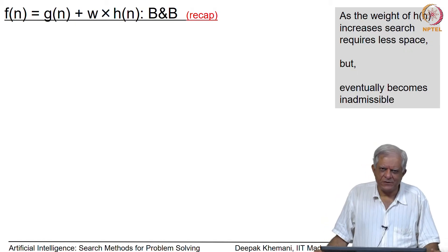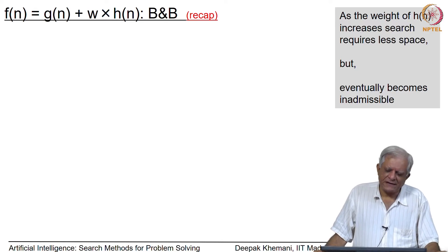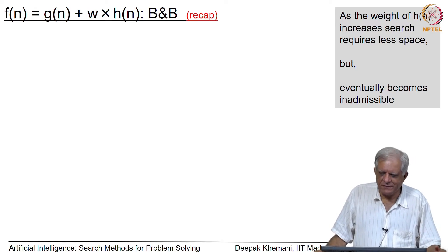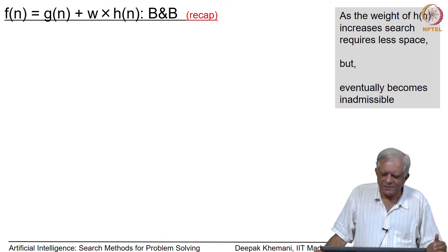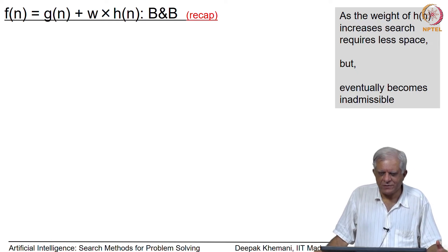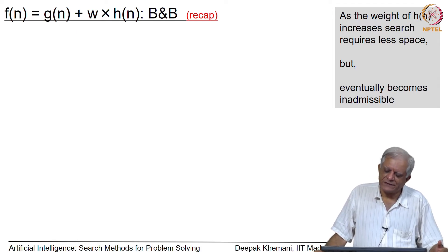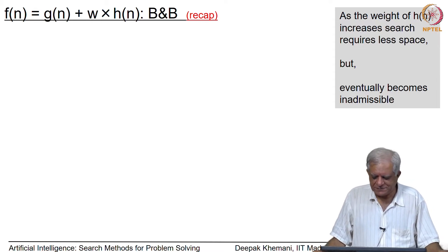Welcome back. We have been looking at space-saving versions of A*. In the last session I was showing you the impact of the weight on the evaluation function f(n) = g(n) + w·h(n). There was a small problem with the slides which has been rectified. So I will start from there, quickly go over the bit on pruning closed, and then move on to pruning open — that is the main topic of today, and in fact the last topic of this algorithm A*.